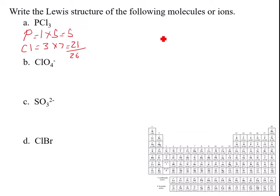Then I draw the skeleton structure: phosphorus, chlorine, chlorine, and chlorine. And every time I draw a line, remember that's two electrons. So two, four, six. So I've used up six to give me 20.